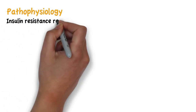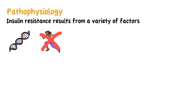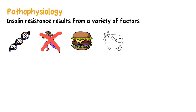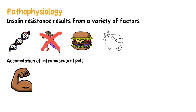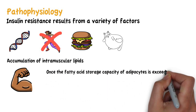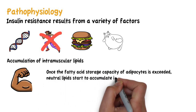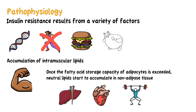As for the pathophysiology of type 2 diabetes mellitus, insulin resistance results from a variety of factors such as genetic predisposition, a lack of exercise, poor eating habits, and obesity. One of the primary hypotheses for insulin resistance development is the accumulation of intramuscular lipids. Once the fatty acid storage capacity of adipocytes is exceeded, neutral lipids start to accumulate in non-adipose tissues like the liver, the heart, and skeletal muscle.